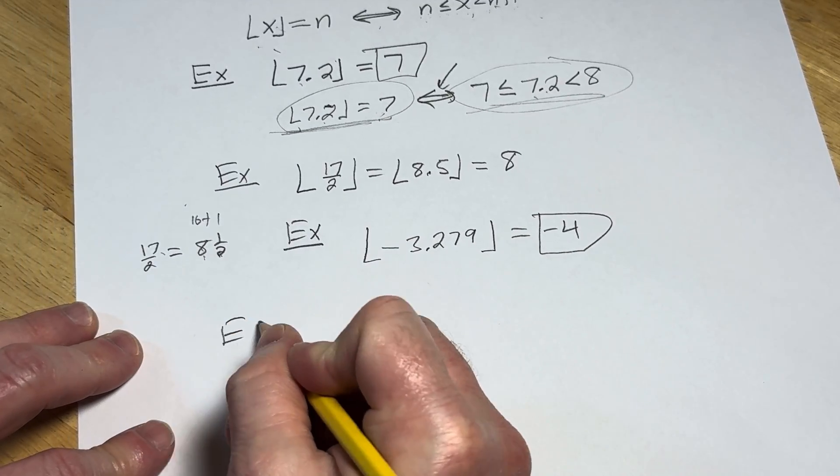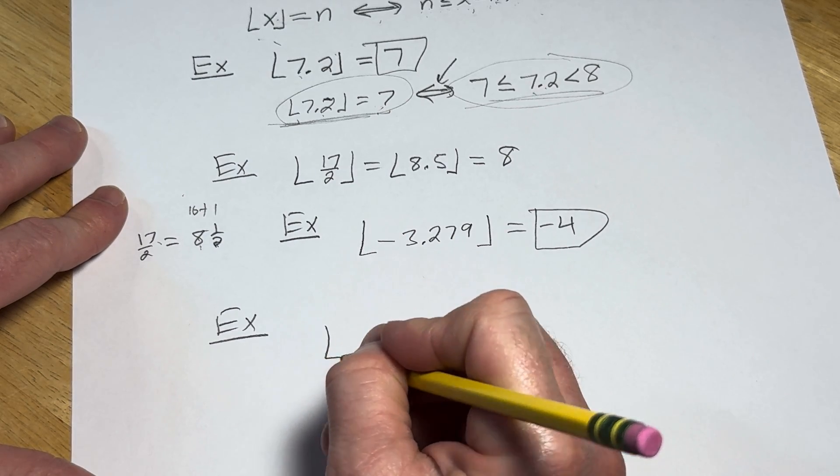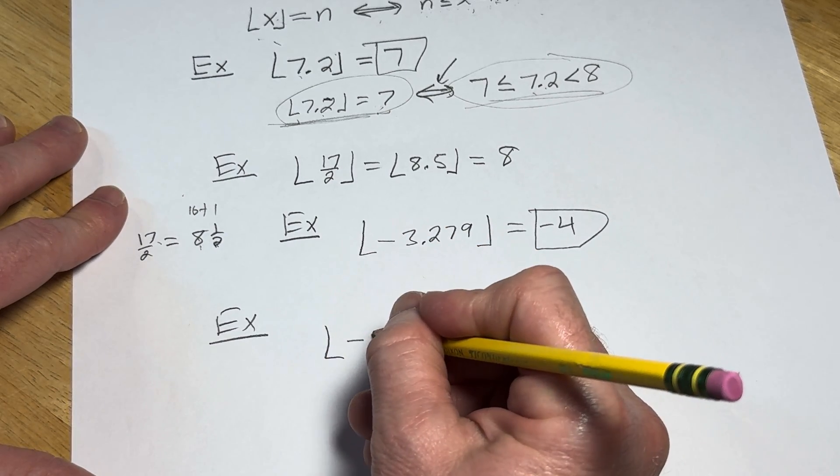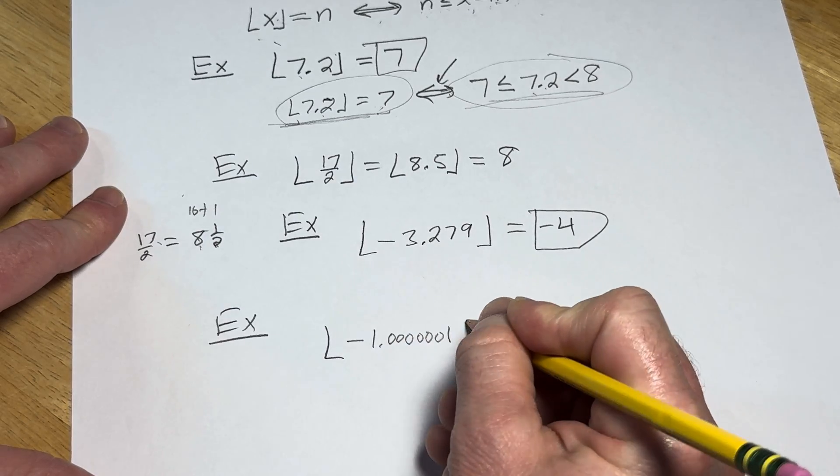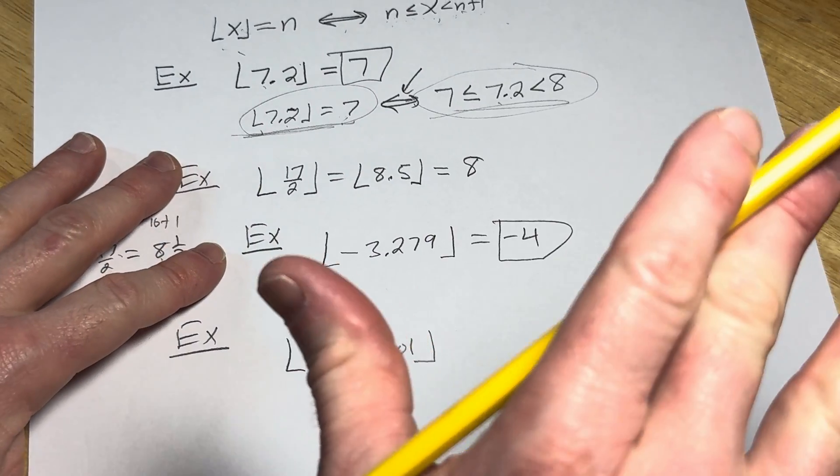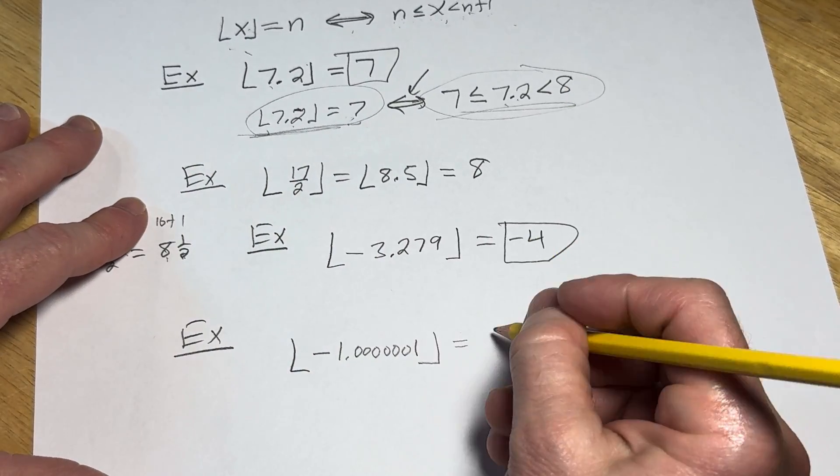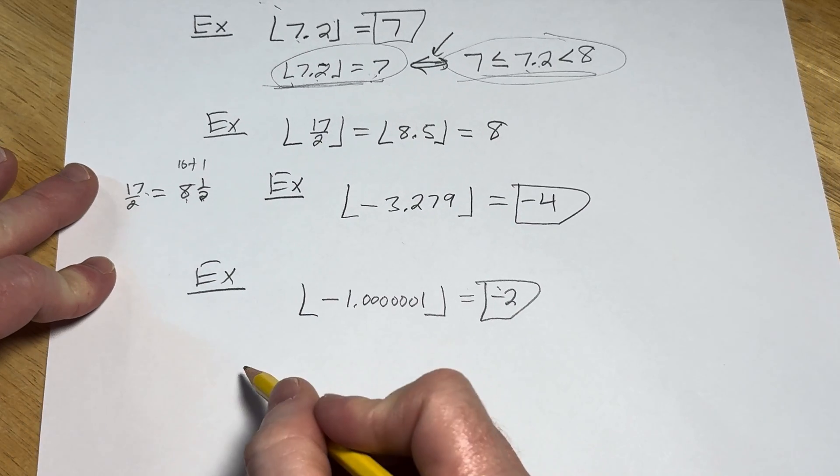Let's look at the floor of -1.0000001. What's the floor of this going to be? It's like oh, it's going to be -1. No, no, no. You have to bring it down, so it's going to go to -2. Let's do another one just to make sure you got it.